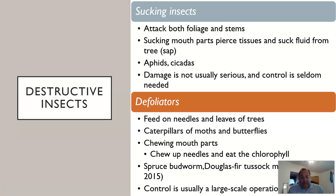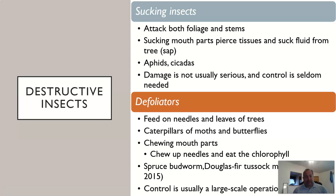Defoliators feed on needles and leaves. Caterpillars are a perfect example — they have chewing mouthparts to chew up needles or eat chlorophyll. Two good examples are the spruce budworm and the Douglas fir tussock moth, which together in 2015 consumed four million acres of trees. Control for defoliators is usually a large-scale operation because once you have defoliators at that level — four million acres — it's going to require extensive effort.